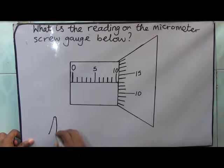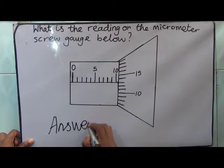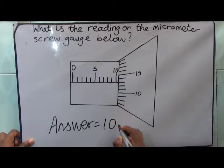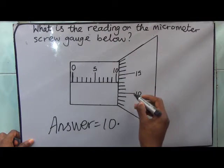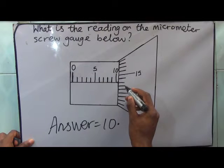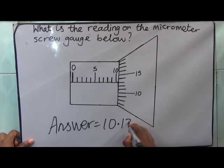So our answer is 10, we have 10mm point what. So what value is this, this is 10, 11, 12, 13. 10.13mm, that's all.